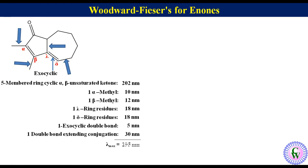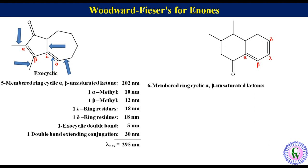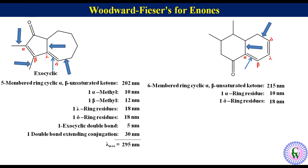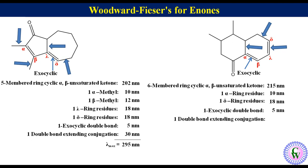Similarly, in this example, these are the alpha, beta, gamma, and delta carbons. The base value for a six-membered ring cyclic alpha-beta unsaturated ketone is 215 nm. There is one ring residue at alpha (add 10 nm) and one ring residue at delta (add 18 nm). This double bond is exocyclic (add 5 nm), and one double bond is extending conjugation (add 30 nm). This also contains a homoannular diene component (add 39 nm). Lambda max = 215 + 10 + 18 + 5 + 30 + 39 = 317 nm.